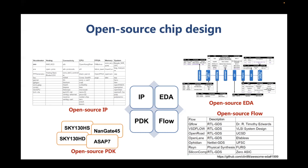We also have many open source EDA tools from the community. For the PDK, Skywater already provides a 130 nanometer PDK. And for the flow, we can find OpenRoad, OpenLane, and Silicon Compiler. In theory, we can build a whole open source ecosystem from the community for chip design.